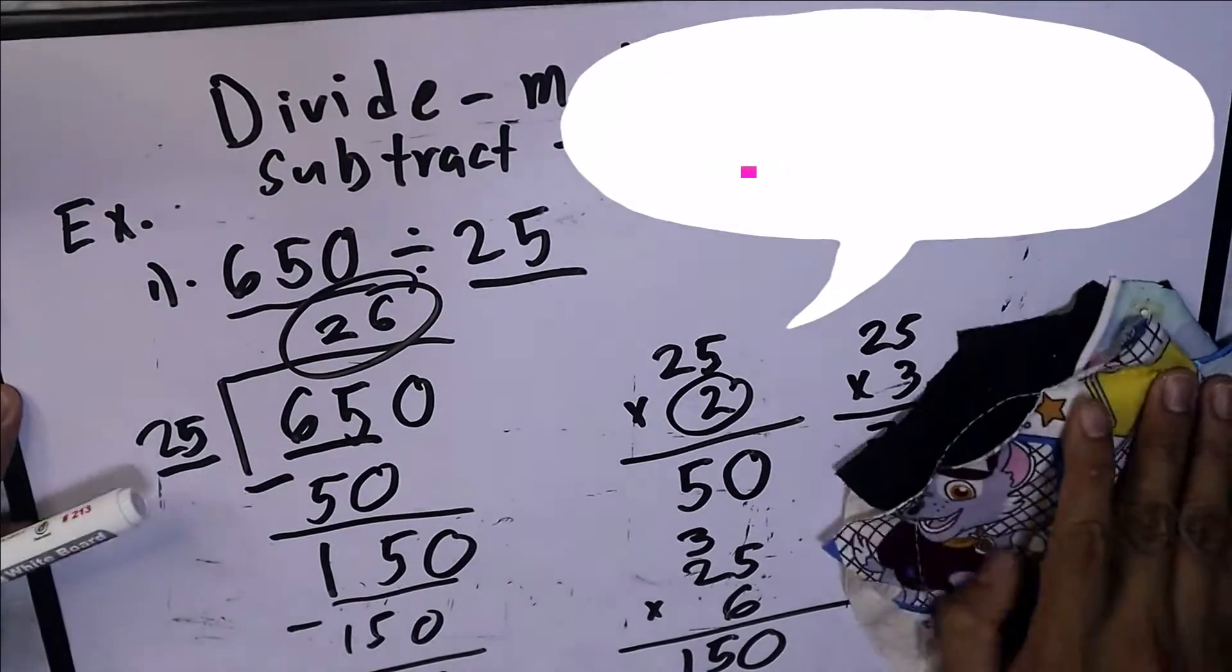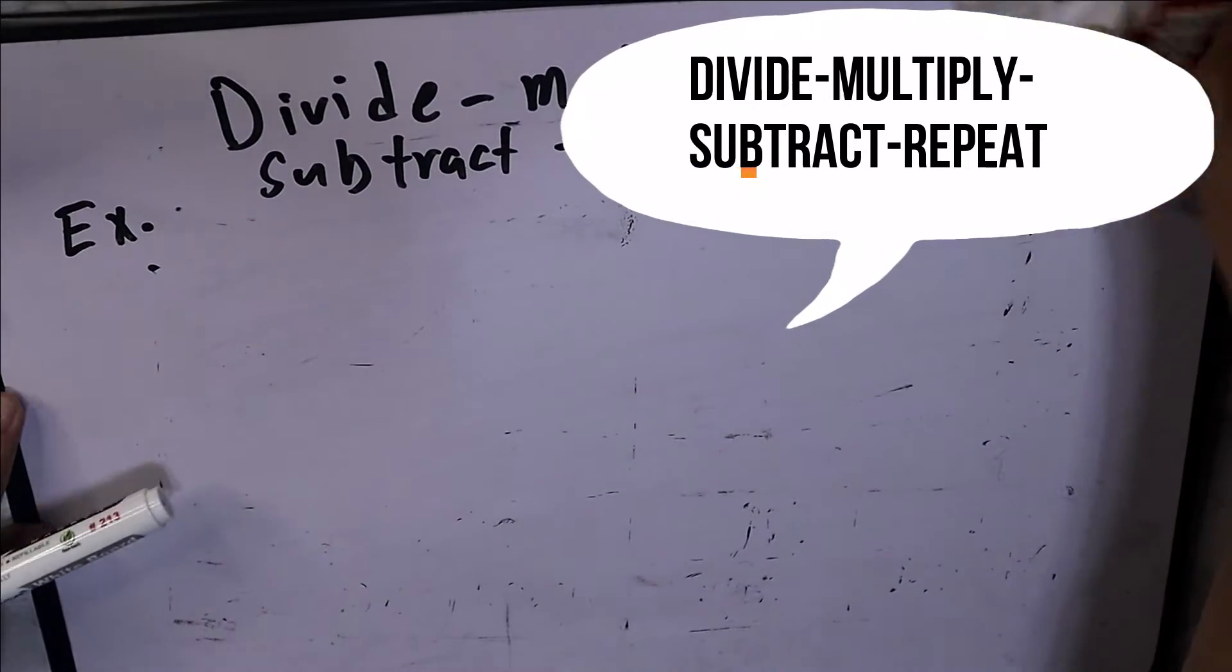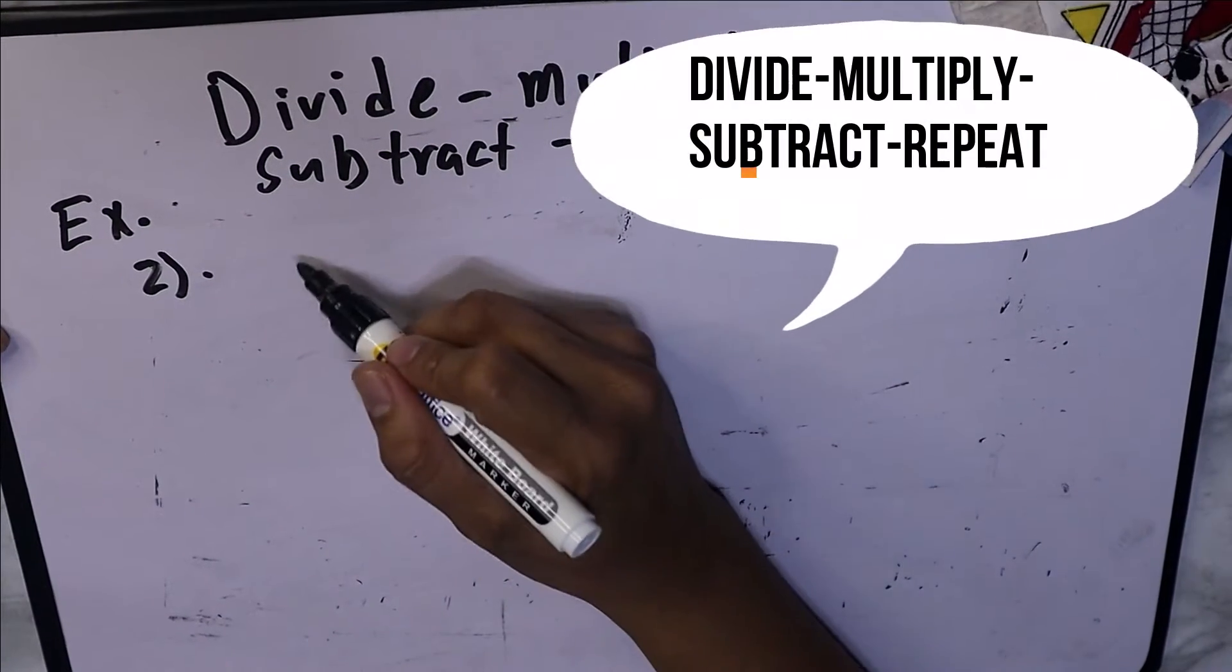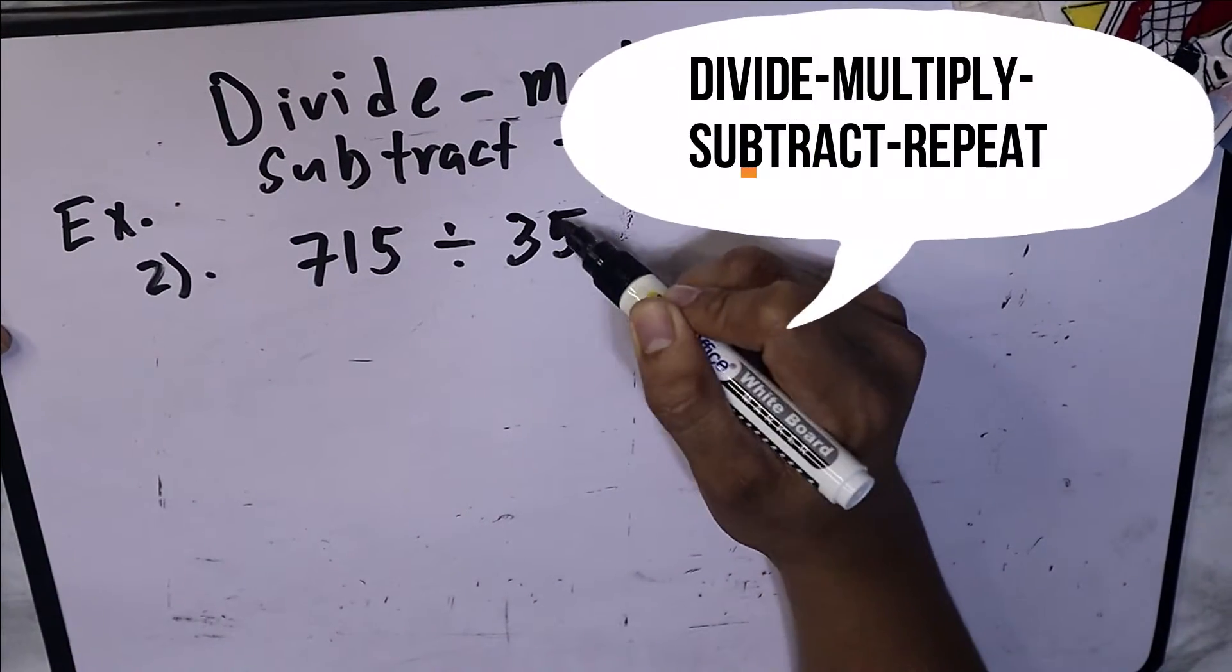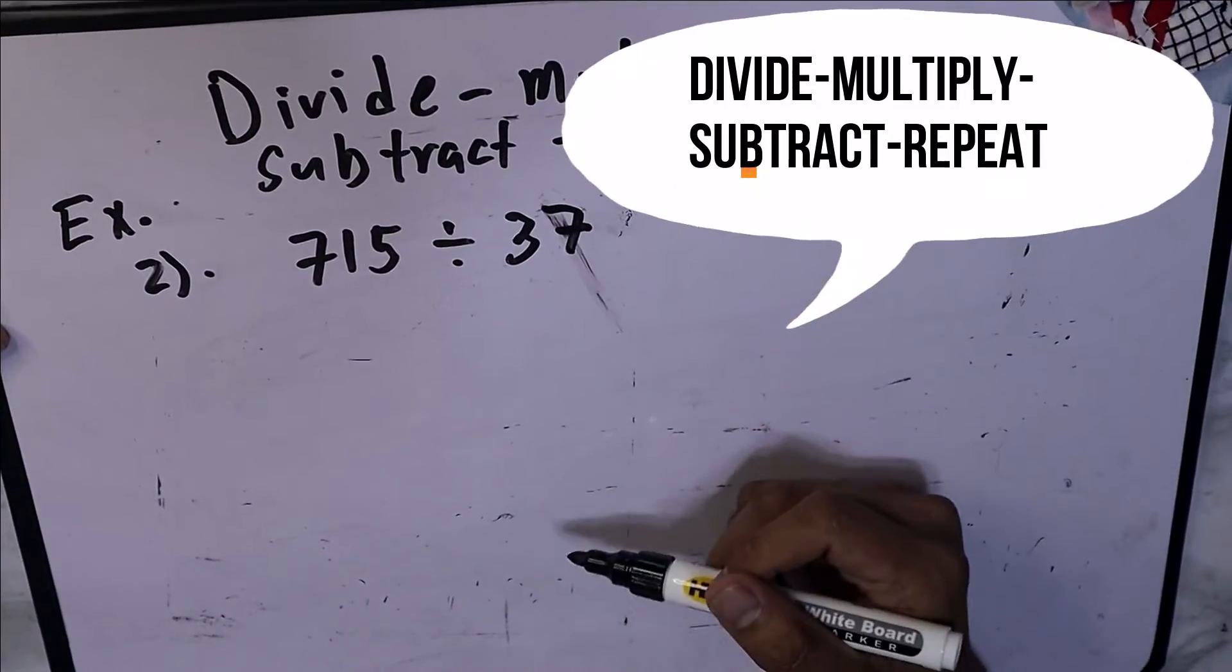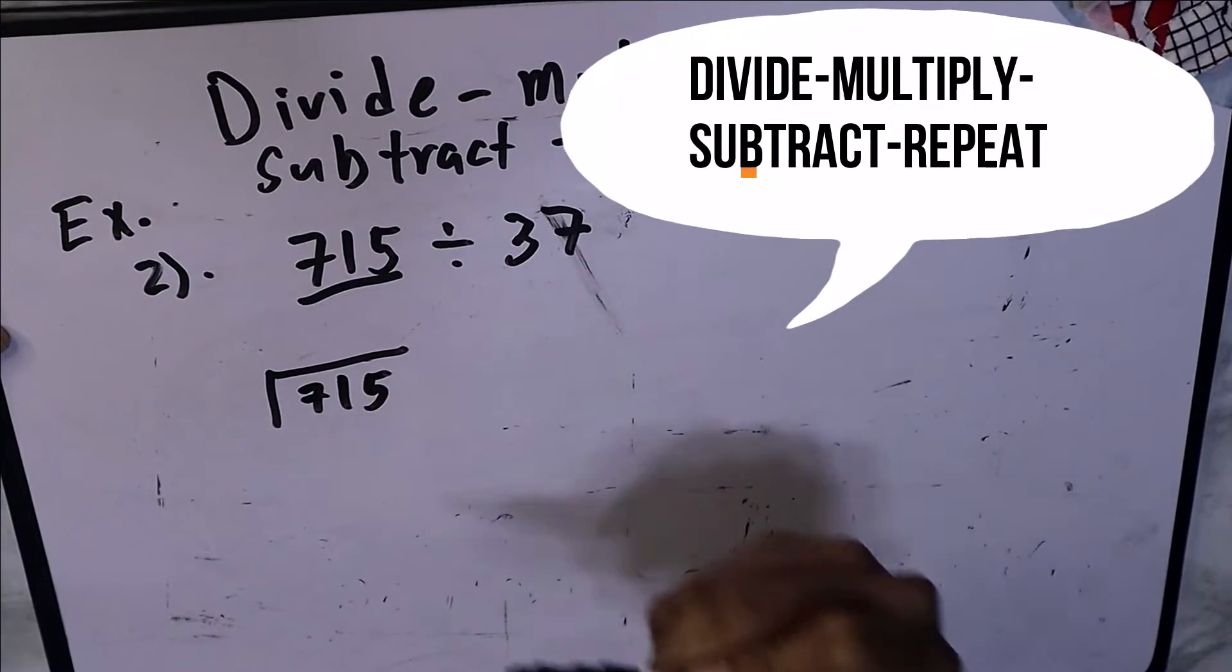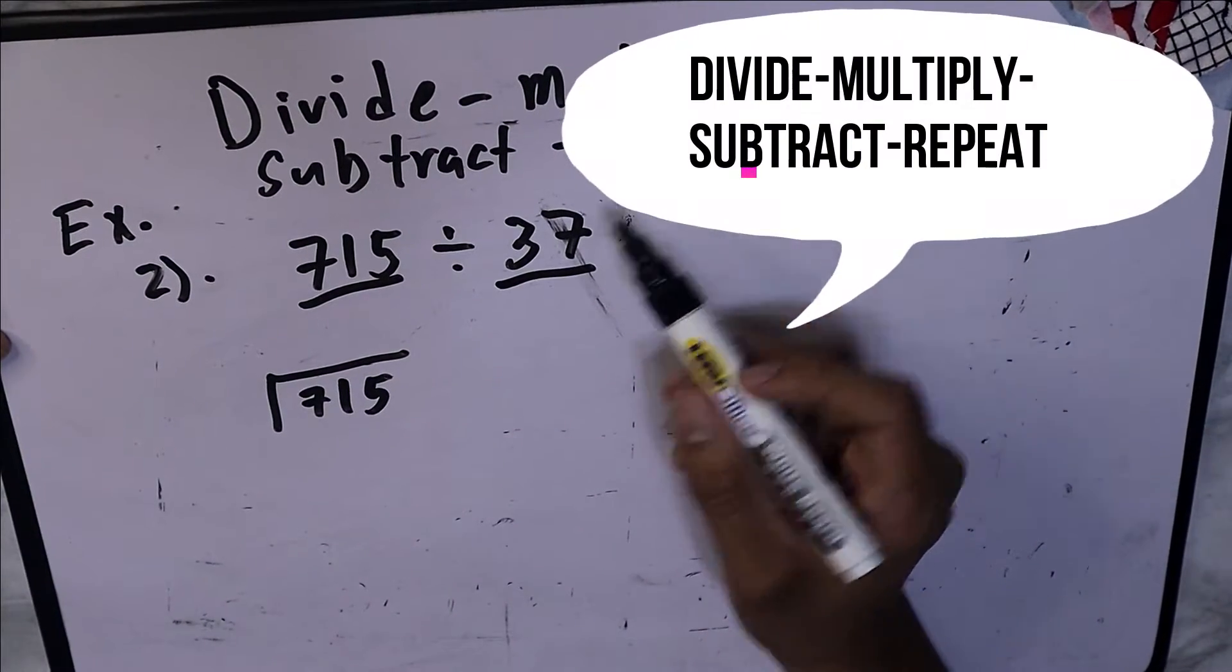Example number 2. This one will be more complicated. Example number 2 is 715 divided by 37. Our 715 is our dividend, which is inside the table. I want you to remember that, guys, because it's very important: which is the dividend and which is the divisor. So 37 is our divisor.